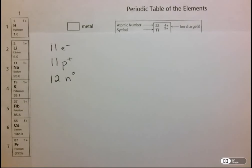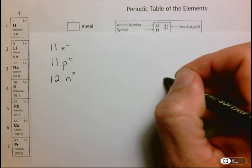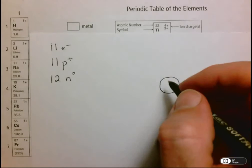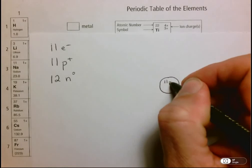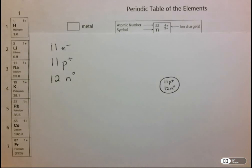First thing we do is draw the nucleus, which is just represented by a circle in the middle. Let's draw our nucleus. Our nucleus contains 11 protons and 12 neutrons.